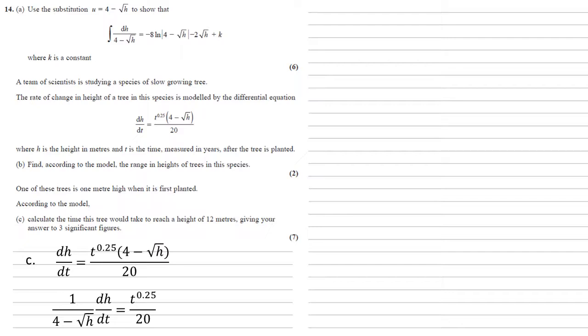Now looking at the left-hand side of this, it's remarkably similar to our integral in part A. So if we integrate both sides with respect to dt, that'll cancel out with dt on the dh by dt, and we'll end up with the integral of 1 over 4 minus root h dh as we have in part A.